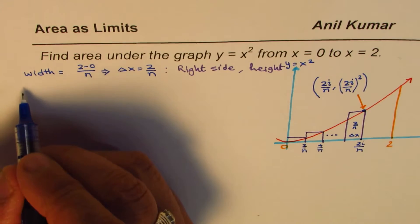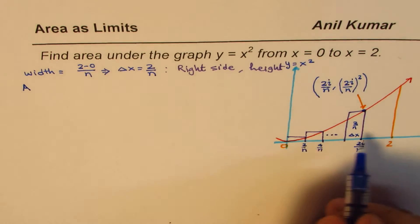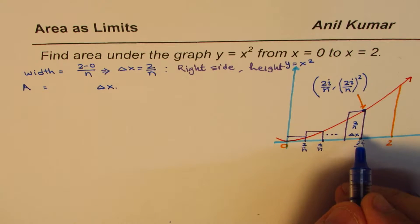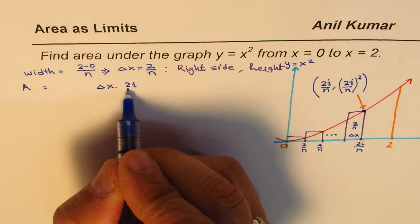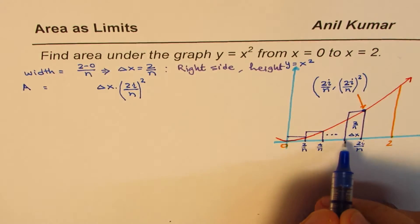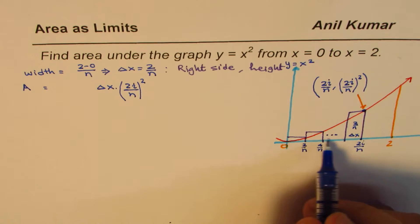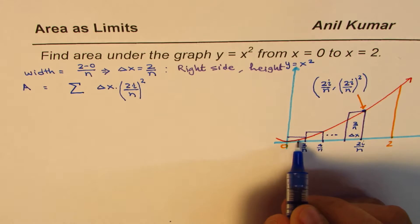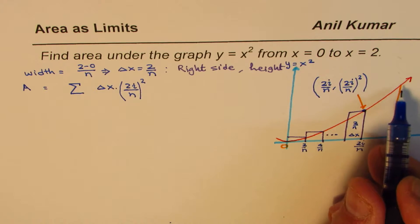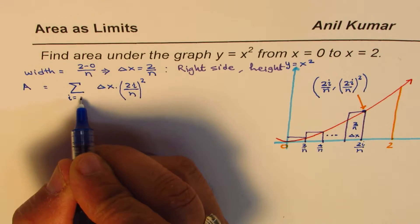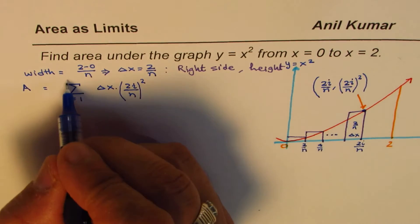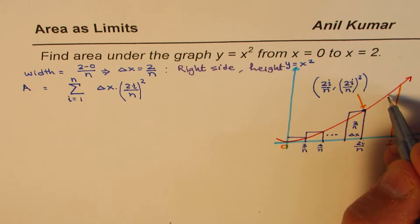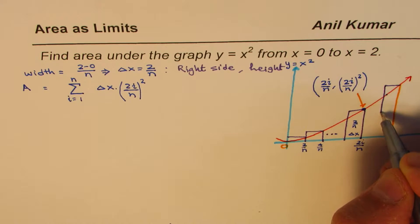The area of this general rectangle is its width times its height. The height equals (2i/n)². So the area of the ith rectangle is (2/n) × (2i/n)². If we add all such rectangles from i = 1 to n, we approximate the area under the graph, taking the right corner as the nth rectangle.